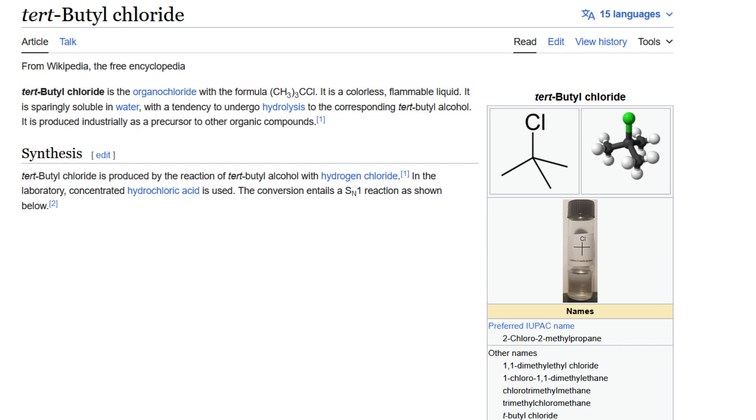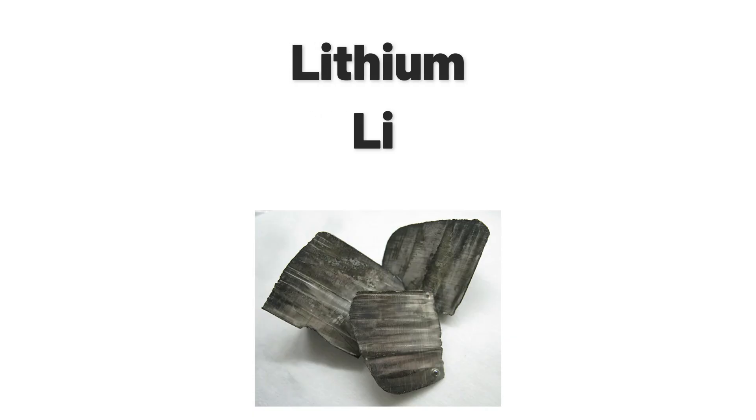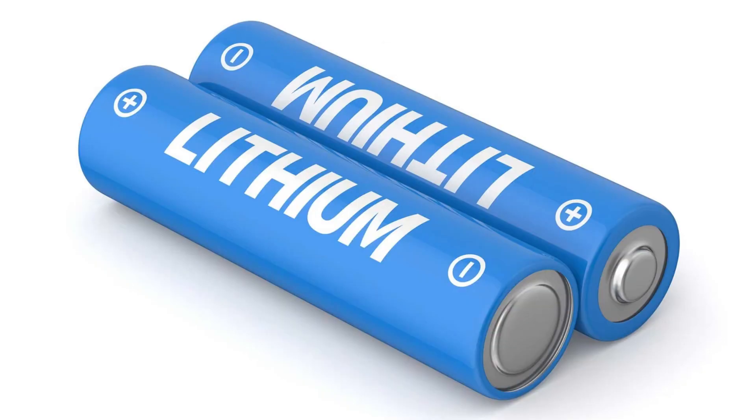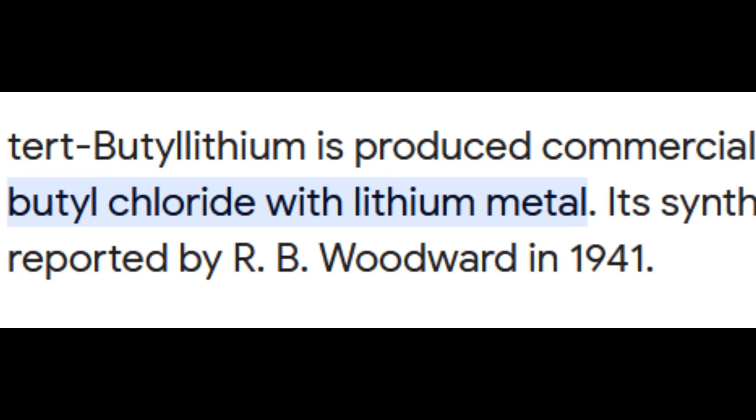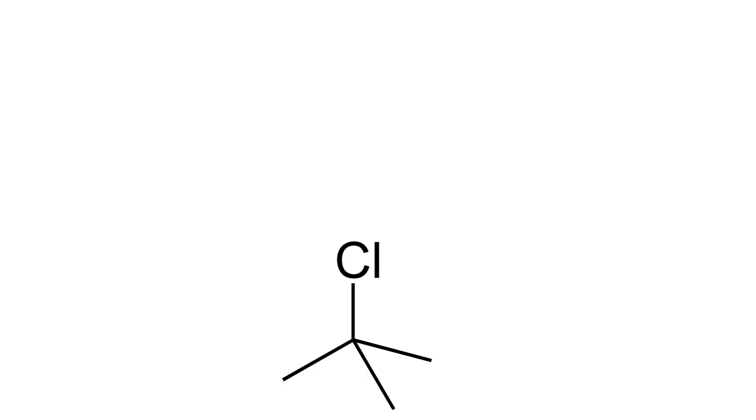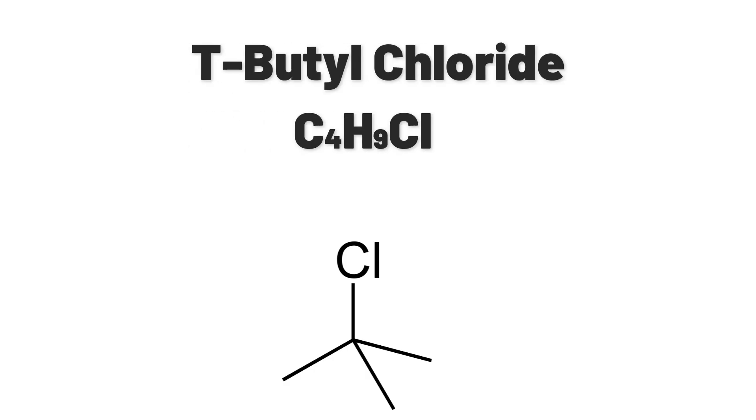This product is then reacted with lithium, a very reactive metal that you can get out of lithium batteries. This reaction forms tertiary butyl lithium. So, let's start this journey and make some tertiary butyl chloride.